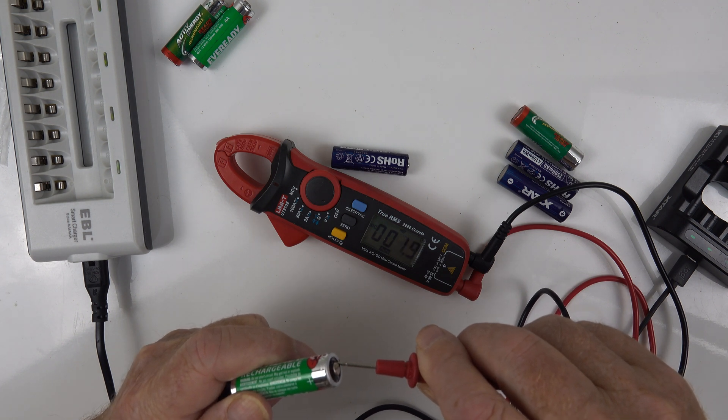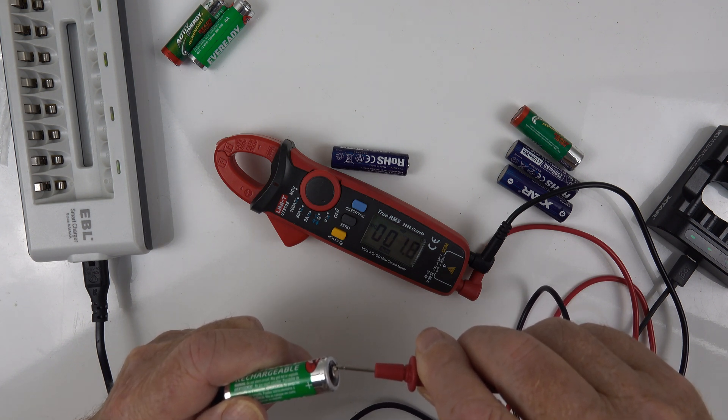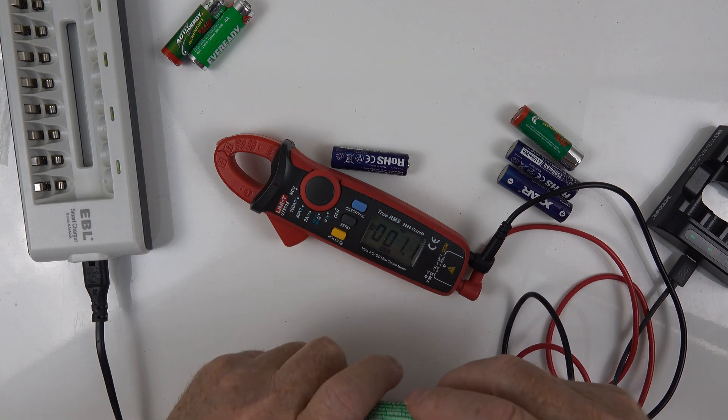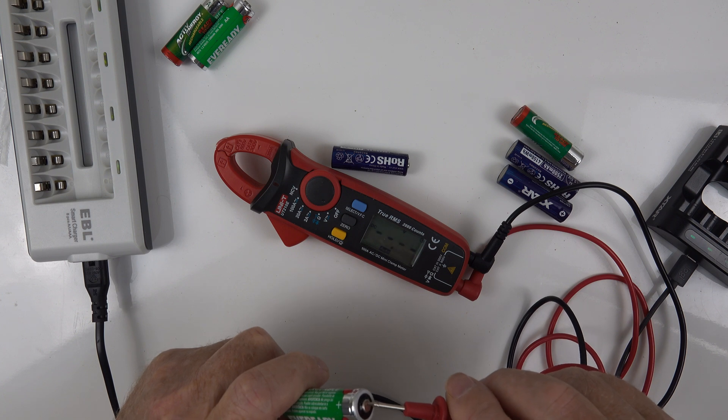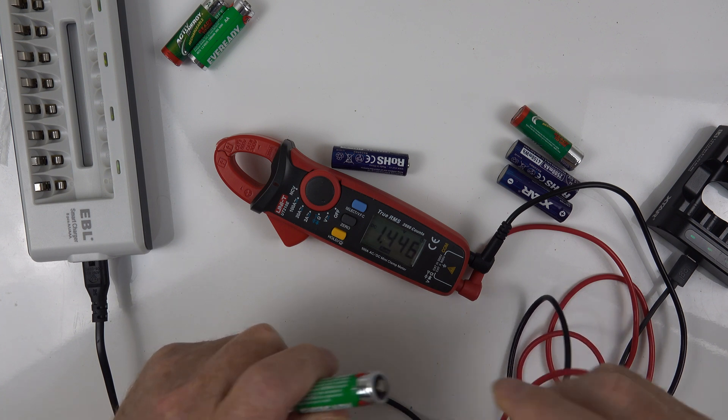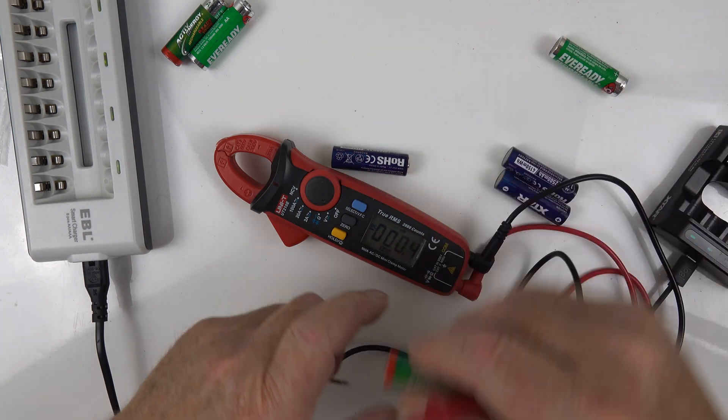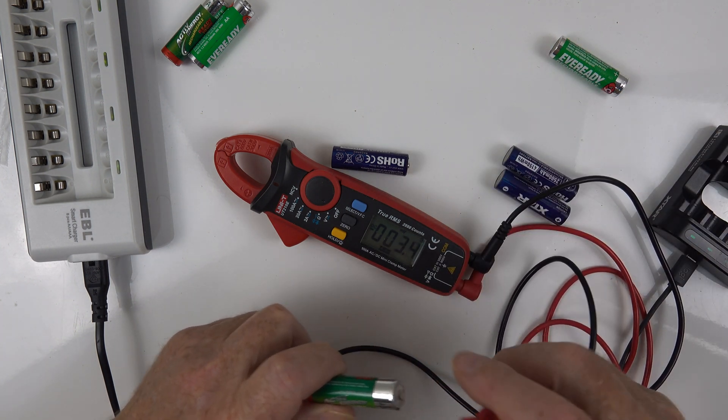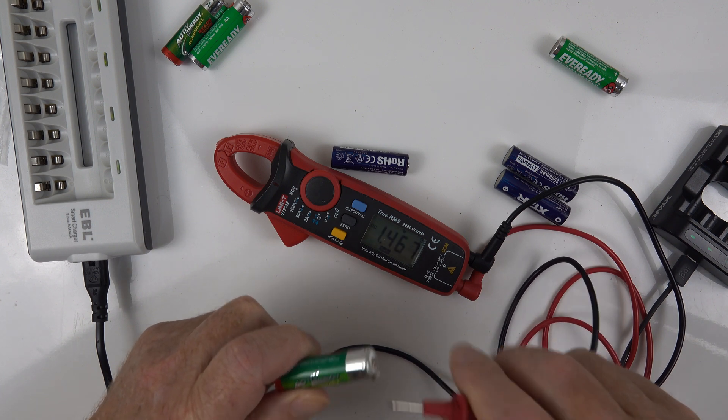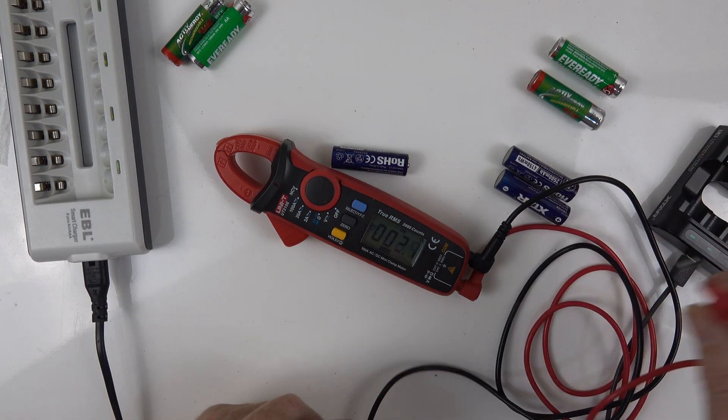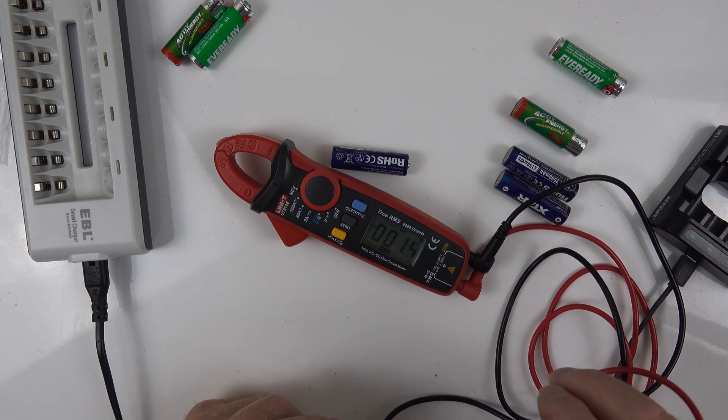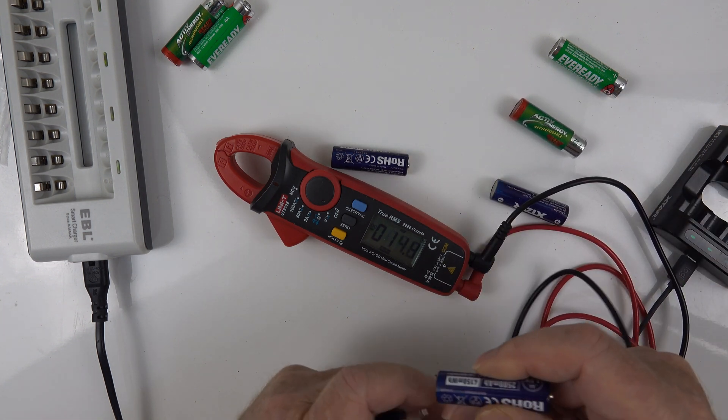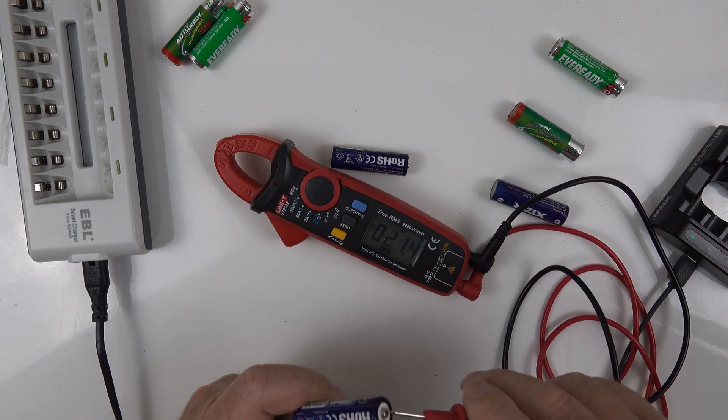What have we got here? Let's try again. That's better. 1.46. 1.67. So the Xtar has definitely done a better job on the nickel metal hydrates. Now let's try the lithium-ion batteries and see what we've got.